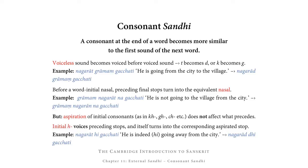For example, in 'Nagarāt grāmaṃ gacchati' — 'he is going from the city to the village' — we have a change in Nagarāt. The T changes into its voiced equivalent D, because it is followed by a voiced sound at the beginning of grāmaṃ. So instead of Nagarāt, we have Nagarād grāmaṃ gacchati.